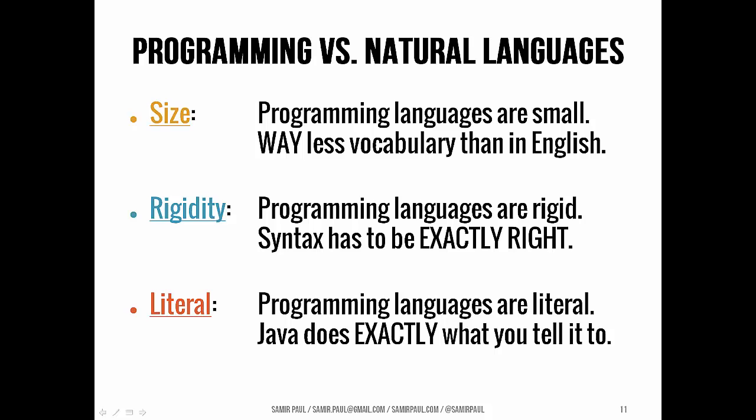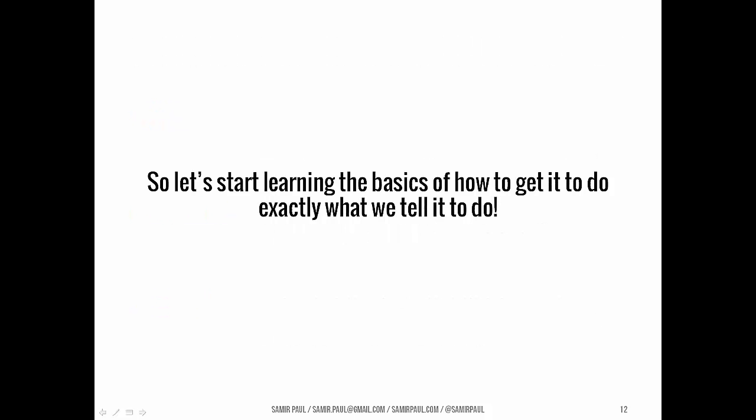There are some key differences. Java programming languages are very small — way less vocabulary than in English. They're rigid; your syntax has to be exactly right or the compiler can't make sense of it. And they're literal — they do exactly what you say. Those ambiguous headlines from the intro to Java video are possible in natural languages, but not in Java because we always take the most literal meaning.